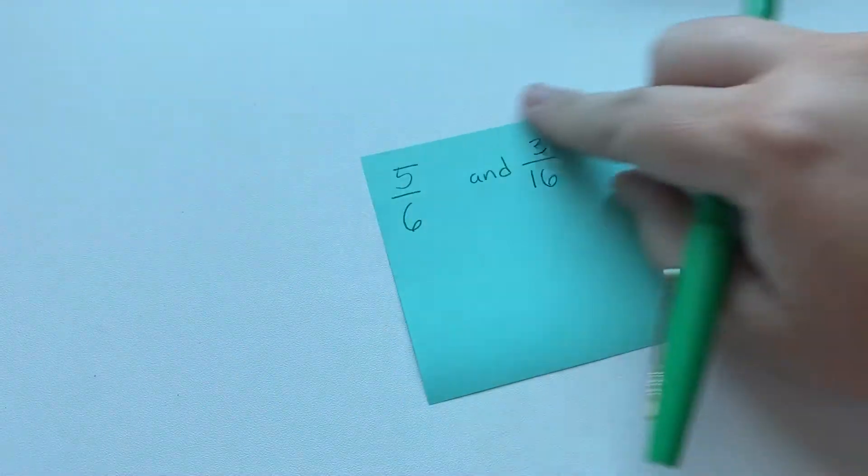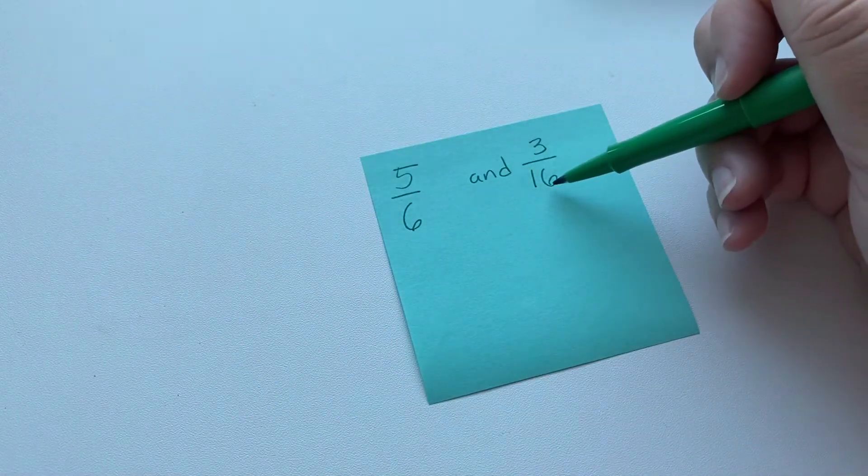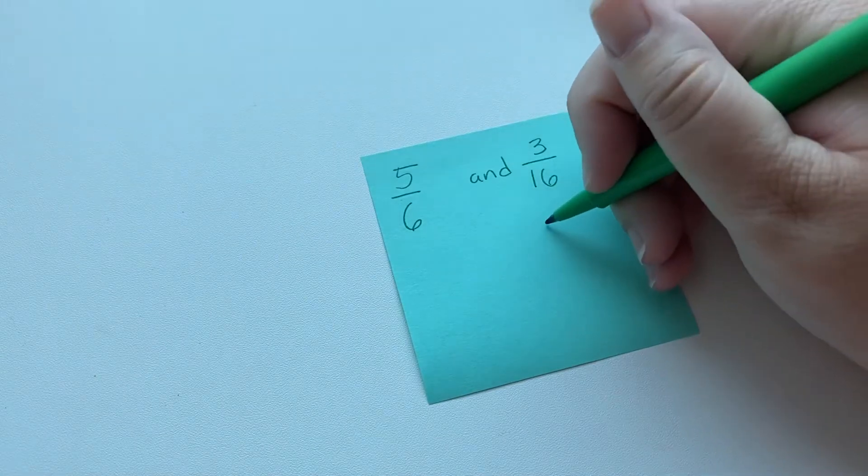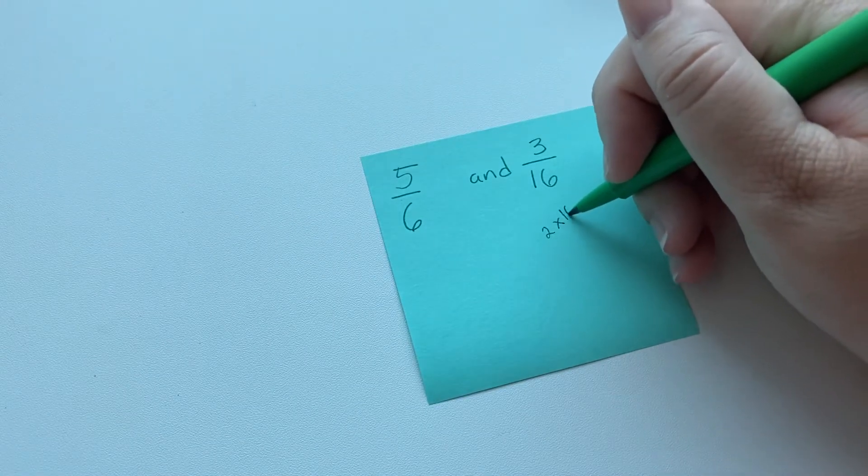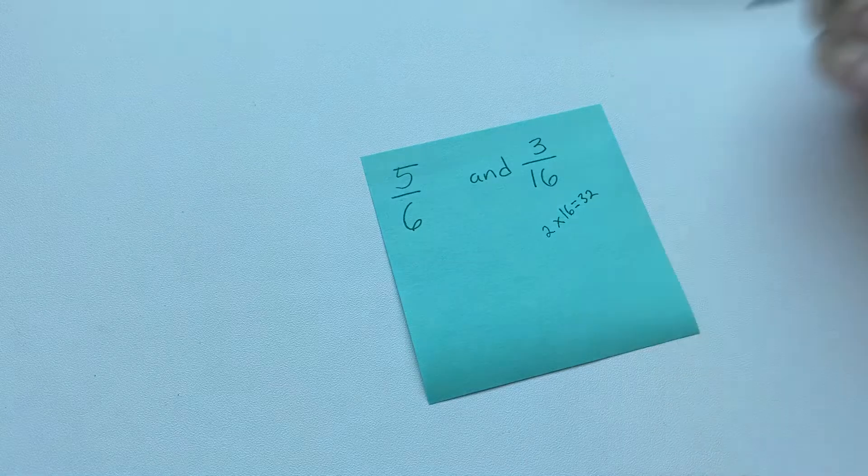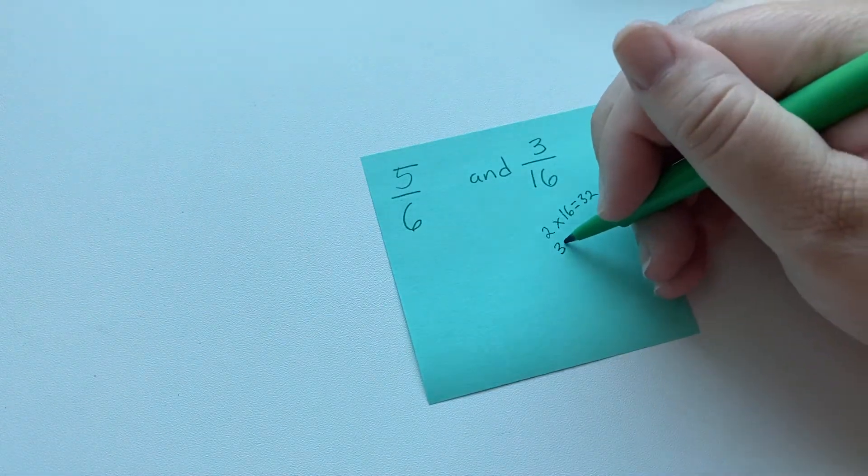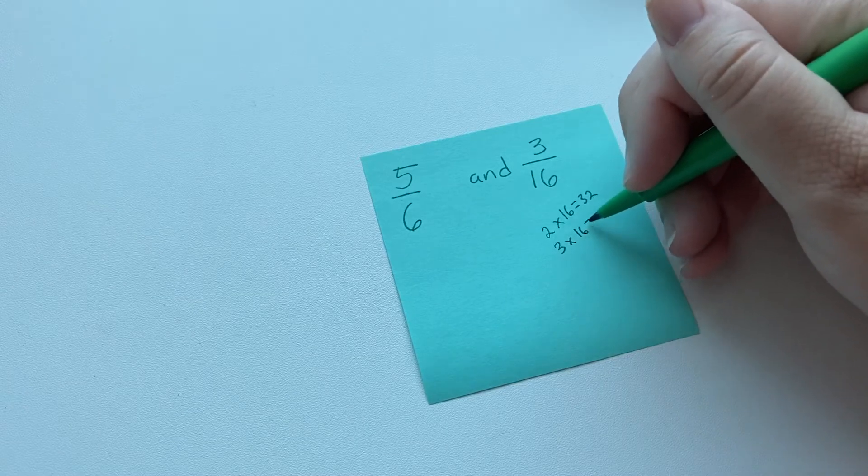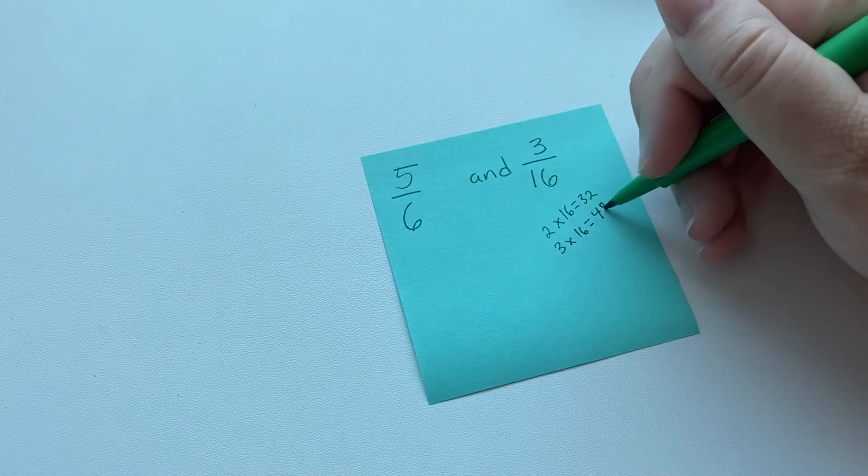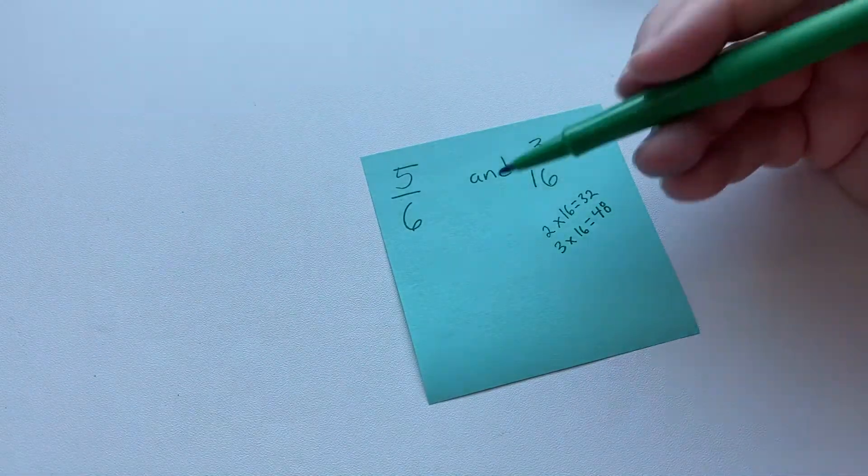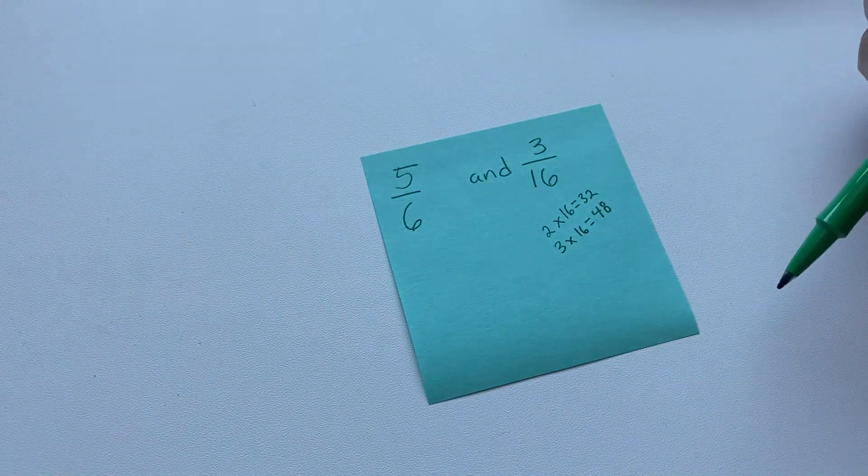Sometimes it doesn't happen so easy. So let's try this. Okay, so we're going to start with the bigger number, and we're going to do 2 times 16. That equals 32. 6 does not go into 32. So let's try 3 times 16, which would be 48. Oh, 6 does go into 48.